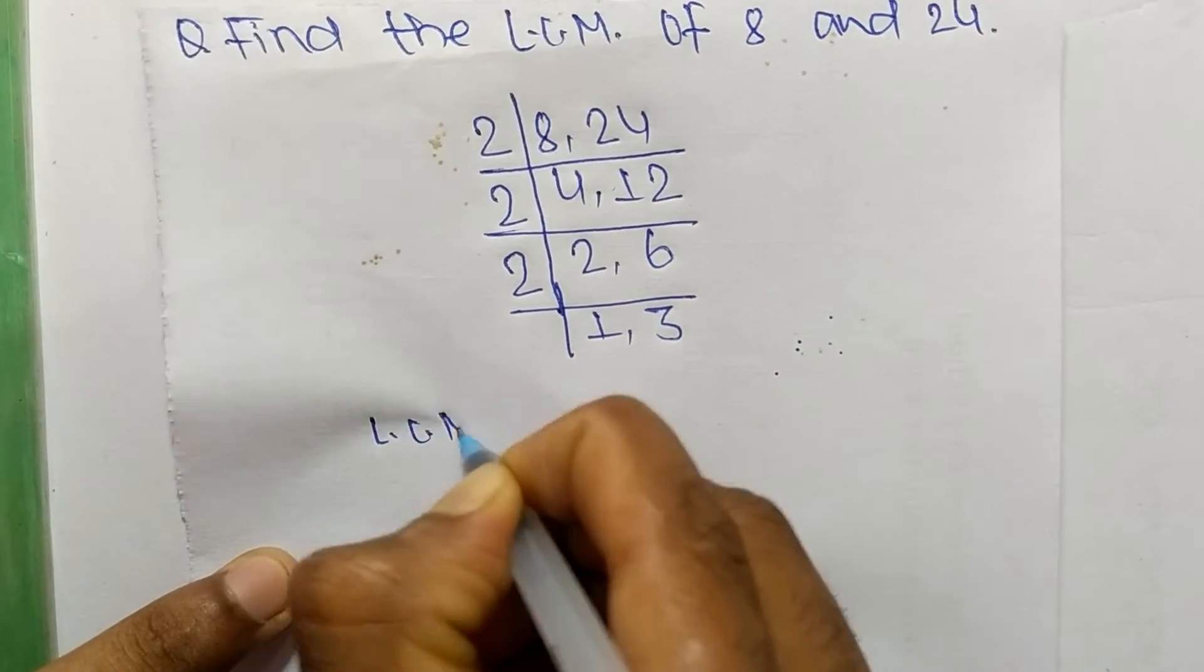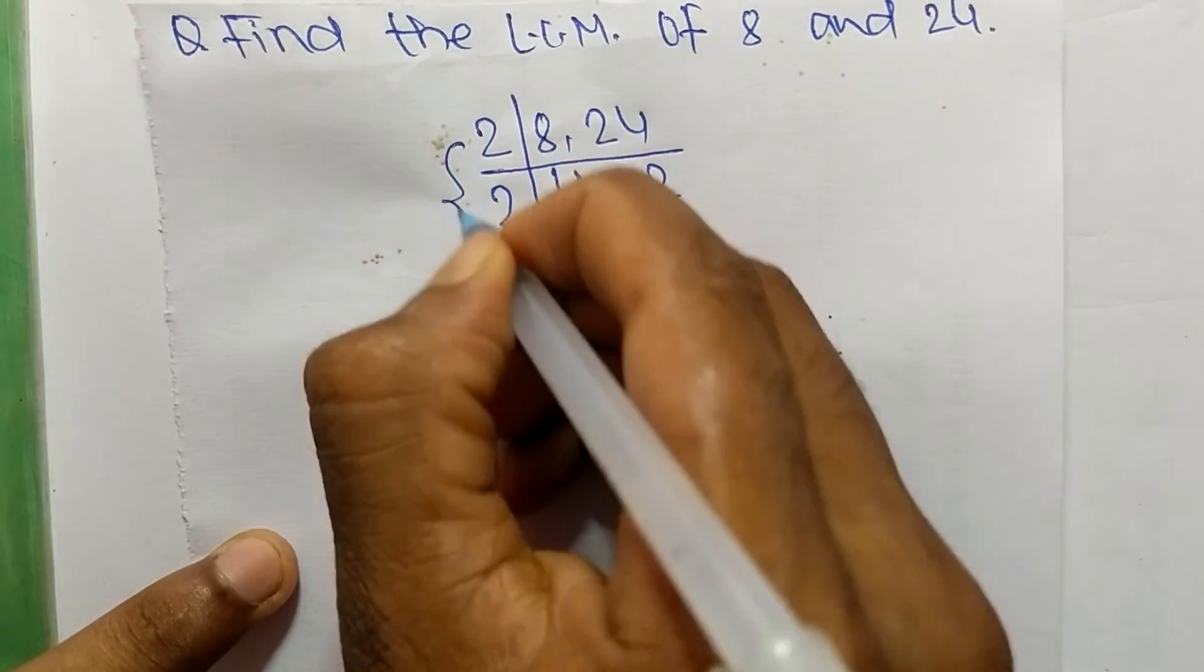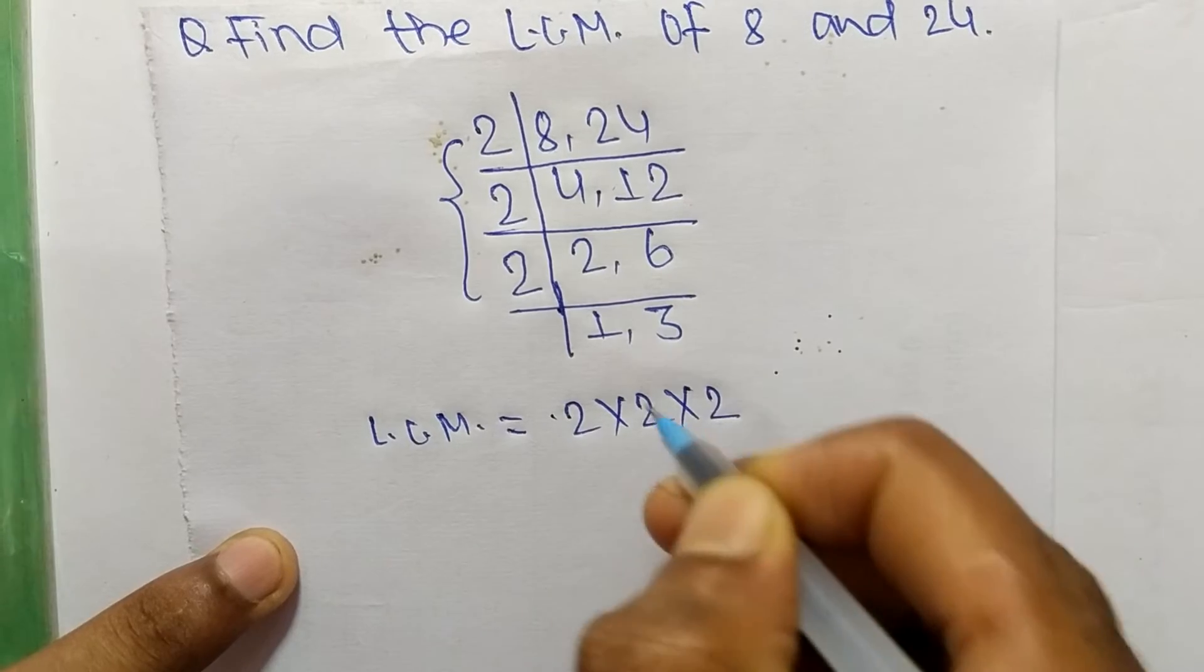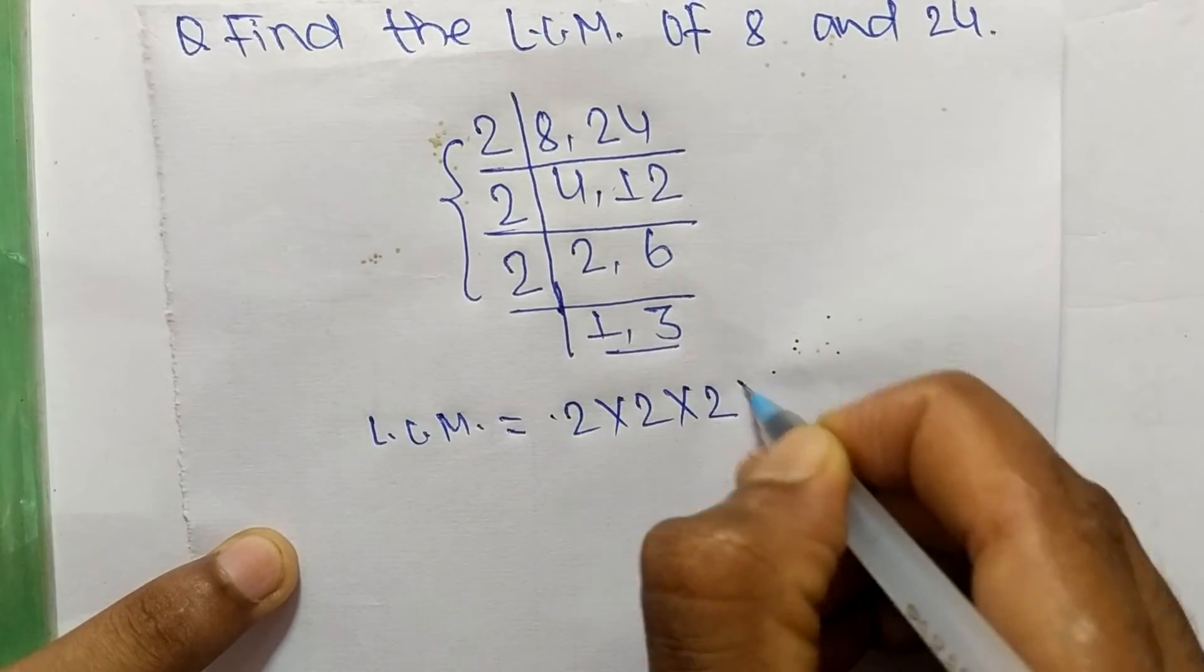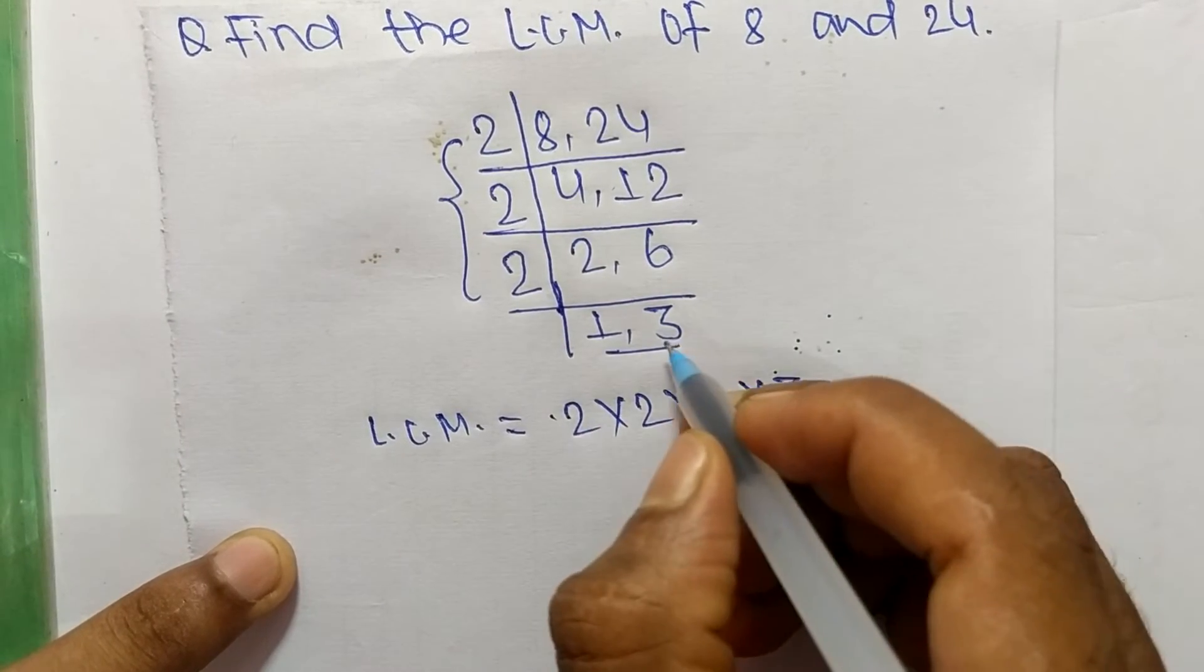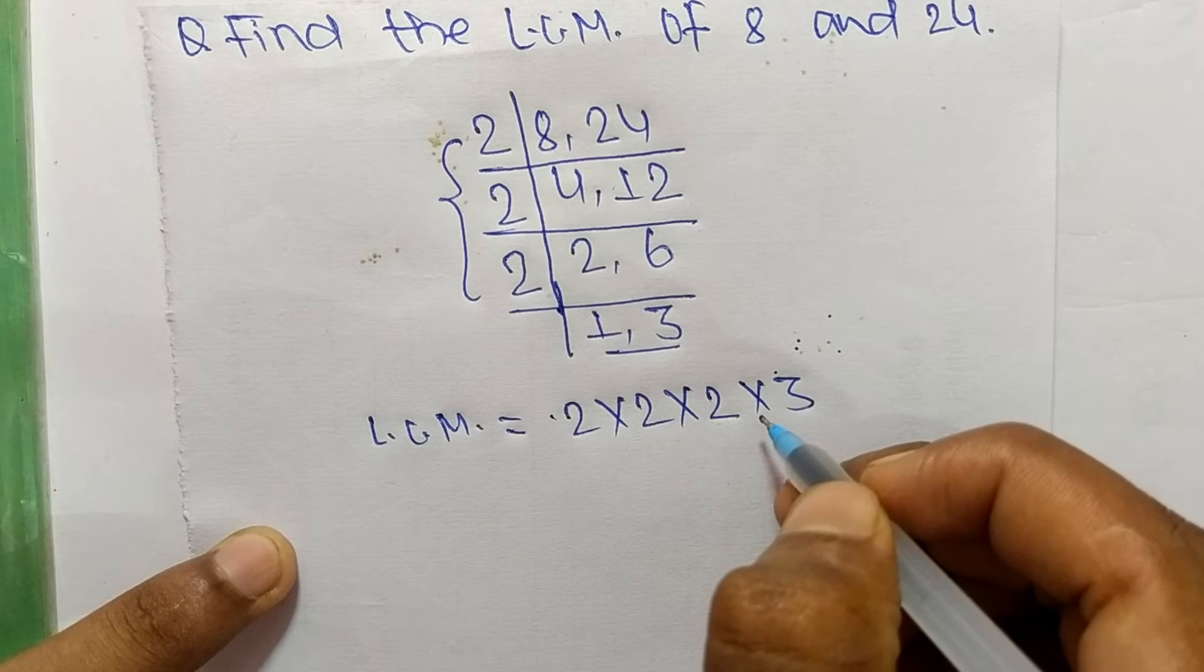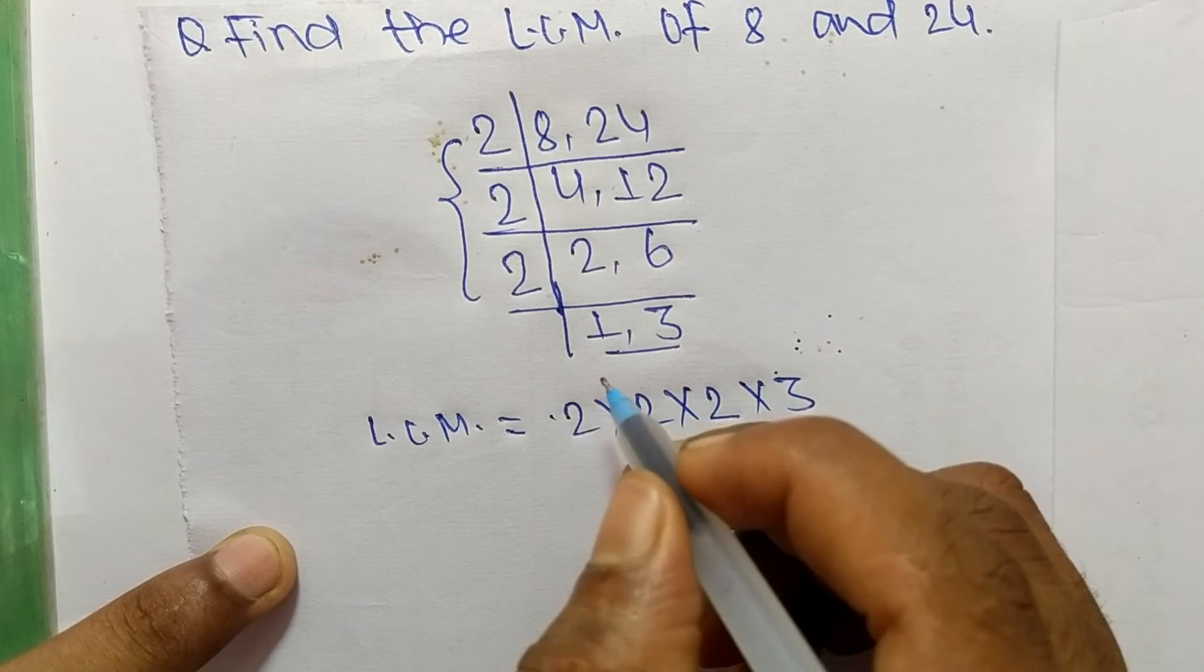The LCM is equal to 2 times 2 times 2 from this part, and from this part we take 3. We neglect 1 because by multiplying any number with 1 we get the same result.